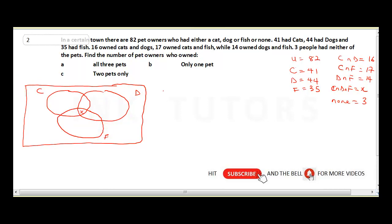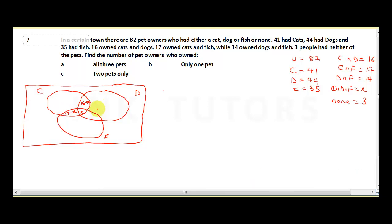The people that own cat and dog — we said that's 16, but inside that 16, some also own fish. So cat and dog only (excluding the triple overlap) is 16 minus X. For cat and fish, it's 17 minus X. For dog and fish, it's 14 minus X.